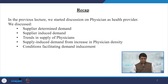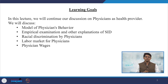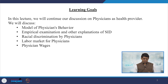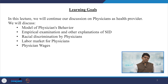We again focus on supply induced demand through physicians. We will discuss physician behavior through a model and empirically examine how it is optimal for the supply side. There are some forms of discrimination made by physicians — one is racial discrimination, and another is through efficiency and non-efficiency based discrimination. The last aspect covered is the labor market for physicians and how wages are responsible for determining supply in healthcare through physicians.